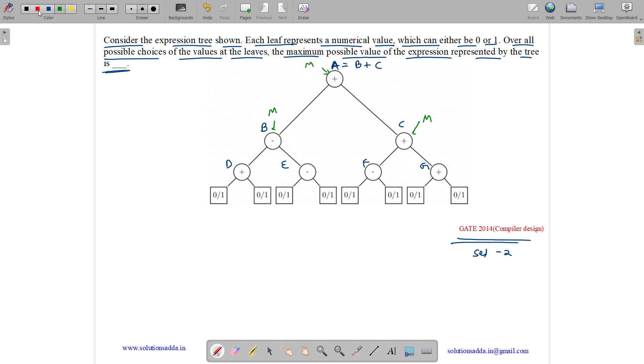Now let us see for B and C. What is the value of B? B equals D minus E. To get maximum value of B, D should be maximum and E should be minimum.